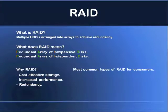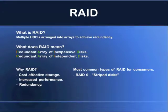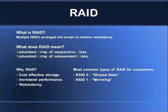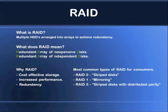For consumers today, the most common types of RAID that are available are RAID 0, also known as striped disks, and RAID 1, also known as mirroring or mirrored disks. And you have RAID 5, also known as striped disks with distributed parity. That's a long name, I know, but that's what it's called.